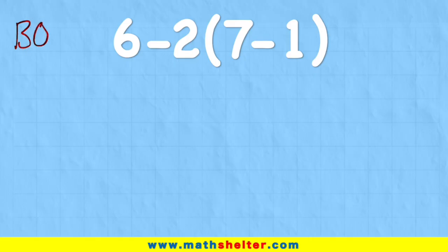O, which stands for order, which is things like squares and square roots. And then we have D for division, M for multiplication.